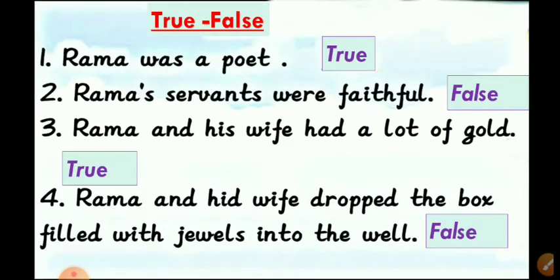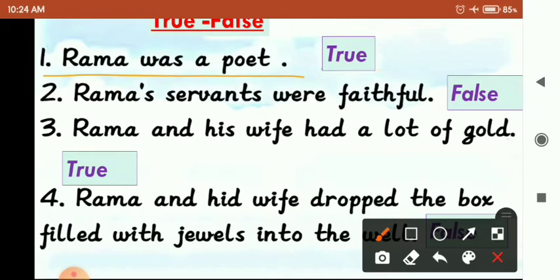Next exercise is True/False. यहाँ पर कुछ sentences दिए हुए हैं, हमें उनमें find करना है कि वो True है या False है. First: 'Rama was a poet.' — Rama एक poet था. True. हाँ, Rama poet था. Second: Rama के servants faithful थे? — No, it's false. वो faithful नहीं थे.